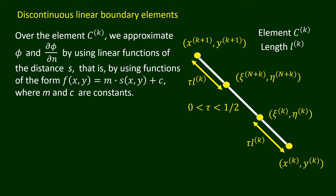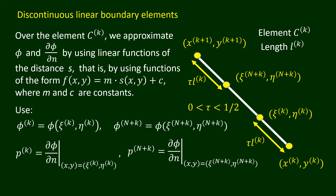The constants m and c are determined by using values of phi and del phi over del n at the points (xi_k, eta_k) and (xi_{n+k}, eta_{n+k}).